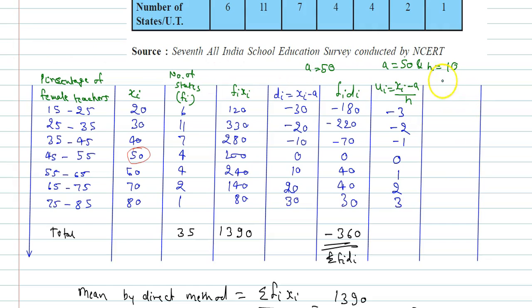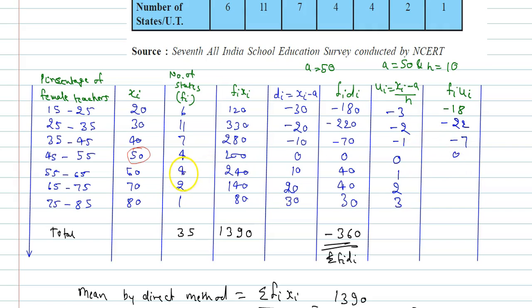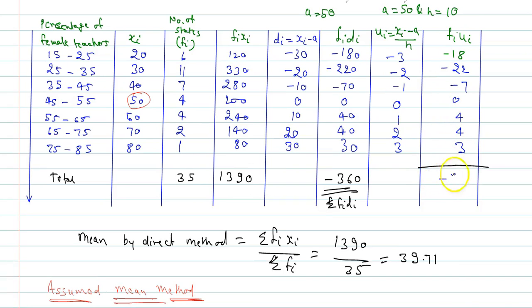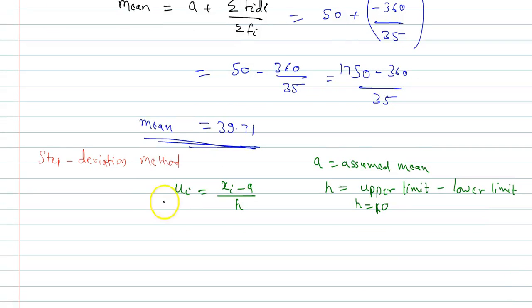Now we calculate FiUi for each Xi: (−3)×6 = −18, (−2)×11 = −22, (−1)×7 = −7, 0×4 = 0, 1×4 = 4, 2×2 = 4, and 3×1 = 3. The summation ΣFiUi = −18 − 22 − 7 + 0 + 4 + 4 + 3 = −36.